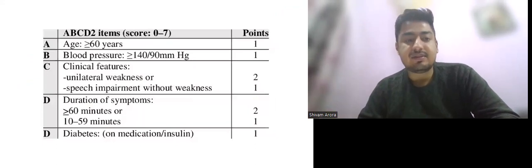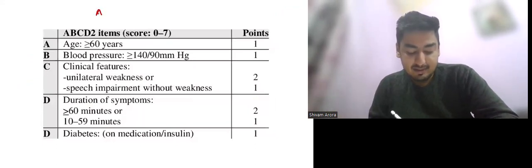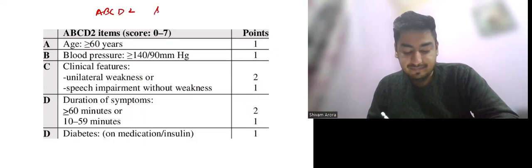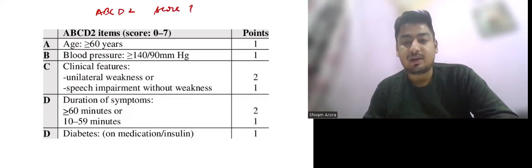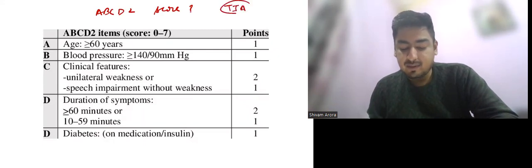This is the third table, the ABCD2 score. First of all, when to calculate this score? In a patient of TIA, we have to calculate ABCD2 score.